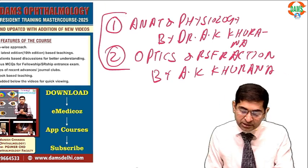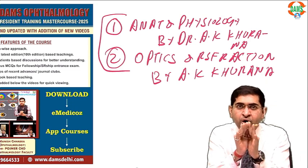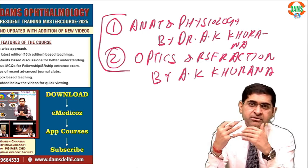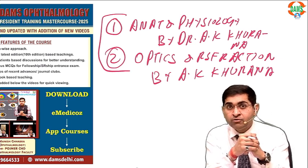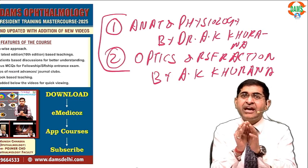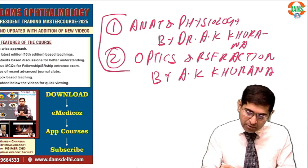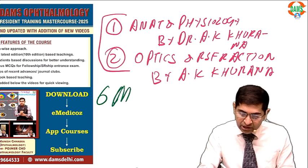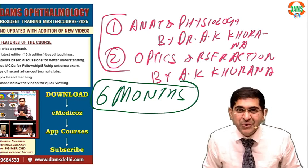Try to finish these two books in the first 6 months of your residency. Side by side, keep a PDF of Kanski's latest edition, because the moment you see any patient in your OPD, ward, or your senior makes you see a patient, just go through that disease in Kanski so that you are able to connect the dots. My suggestion to all new residents: finish these 2 books in the first 6 months.